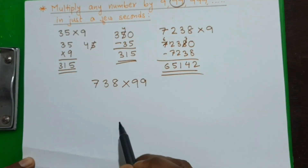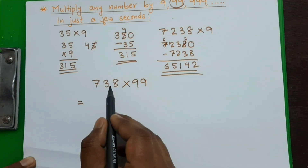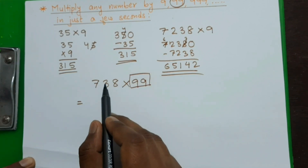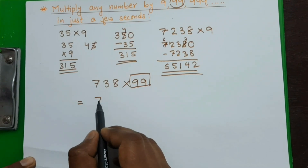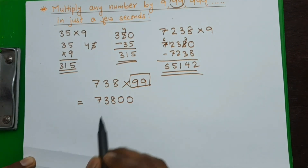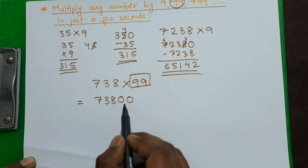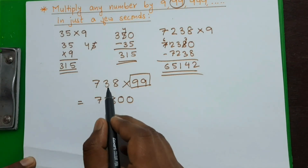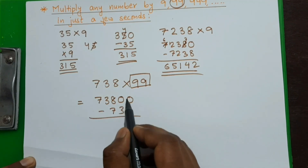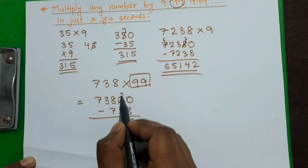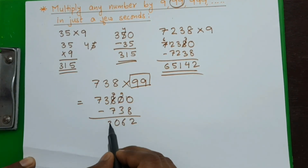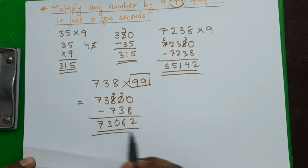Using our short method: first we multiply the original number by 100, because we are multiplying by 99. Multiplication by 100 is simple — we just put two zeros behind the number. So 738 × 100 = 73800. In the second step we subtract the original number 738. Writing it as 837 in reverse, subtracting: 10 minus 8 is 2, 9 minus 3 is 6, 7 minus 7 is 0, giving us 73062. Isn't it too quick!